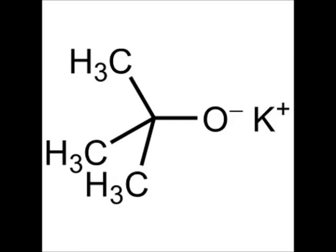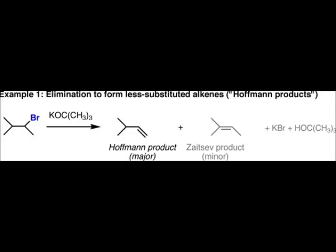These superbases are actually quite useful in organic chemistry. Potassium t-butoxide, for example, is used to take compounds known as alkyl halides, which are compounds containing carbon, hydrogen, and a halogen, and only single bonds, and turn them into alkenes, which are compounds with carbon, hydrogen, and a double bond. And it does this by removing a hydrogen and the halogen from the alkyl halide.